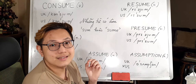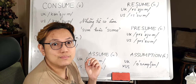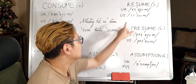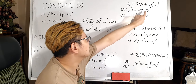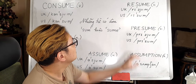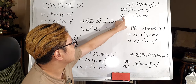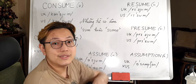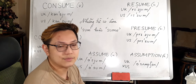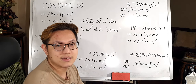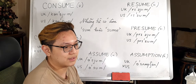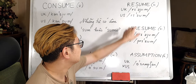So UK pronunciation is 'resume' — second syllable stressed. And the US way is 'resume'. I say 'resume it', 'resume my work'.